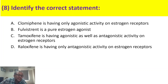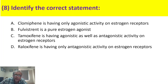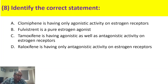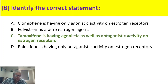Here you have to identify the correct statement about agents acting on estrogen receptors — some are agonists, some antagonists, and some are mixed. Clomiphene is not purely agonistic; it is a pure antagonist. Fulvestrant is not a pure agonist; it is an antagonist. Raloxifene is not purely antagonistic — it is a selective estrogen receptor modulator with agonistic action on certain receptors and antagonistic action on others. The correct option is C, tamoxifen, because like raloxifene, tamoxifen has both agonistic and antagonistic activity on estrogen receptors depending on which organ the receptors are present.